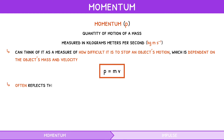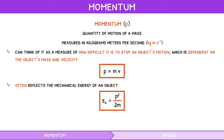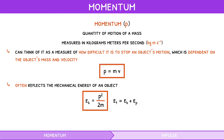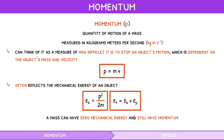Momentum often reflects the mechanical energy of an object. The formula relating kinetic energy and momentum is: kinetic energy equals momentum squared divided by 2 times mass. Note that total mechanical energy is the sum of kinetic and potential energy, so a mass can have zero mechanical energy and still have momentum.